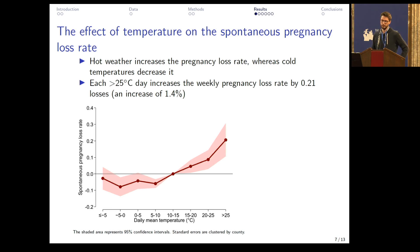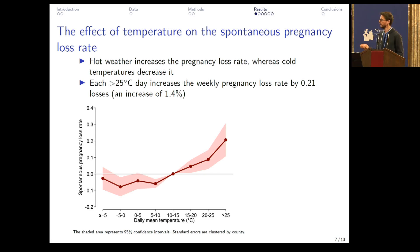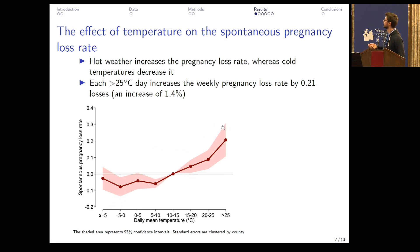This figure shows the beta coefficients from the first equation. Compared to the reference temperature category, colder temperatures slightly decrease the spontaneous pregnancy loss rate, whereas higher temperatures increase it. So it's a non-linear relationship. There is no difference between the colder temperature categories, but above the reference category, the higher the temperature, the higher the spontaneous pregnancy loss rate. Looking at the highest temperature category, each day with a mean temperature over 25 degrees Celsius increases the weekly pregnancy loss rate by 1.4%.